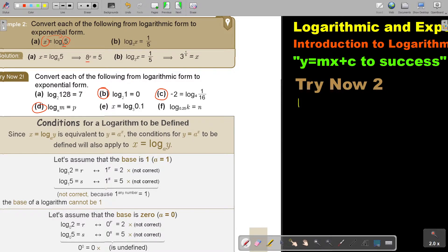Let's start. Number B. So it's going to be log 2, 1 equals 0. So keep the base. Keep the base. There's the base. Swap that too. So 2 to the power of 0 is 1. Is that correct? Yes.